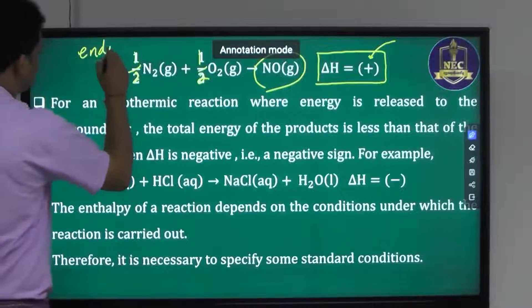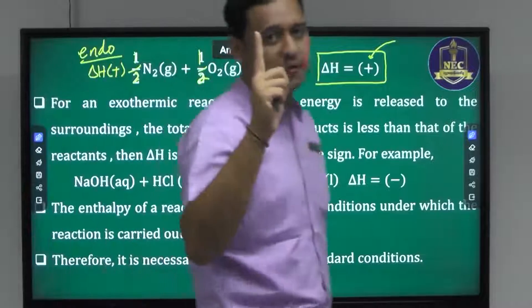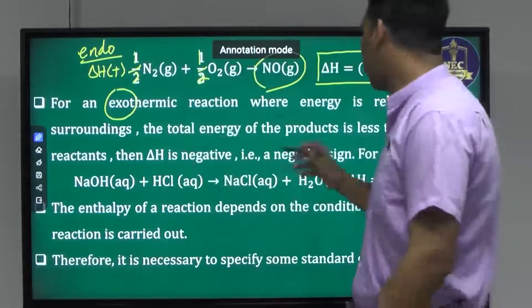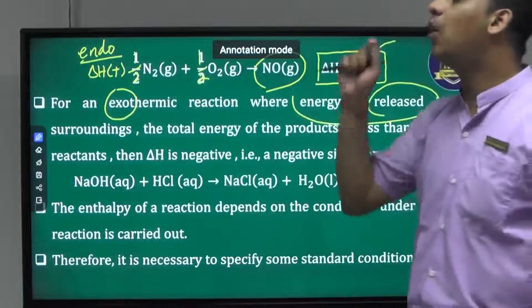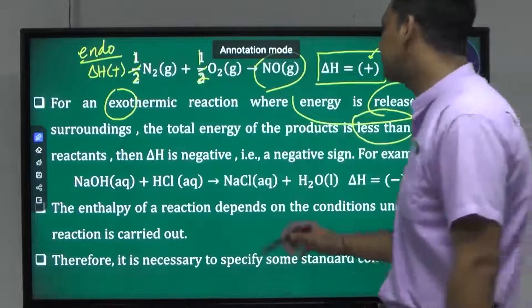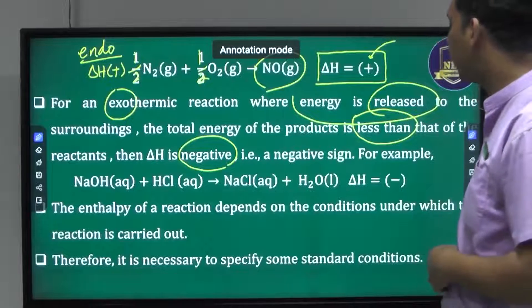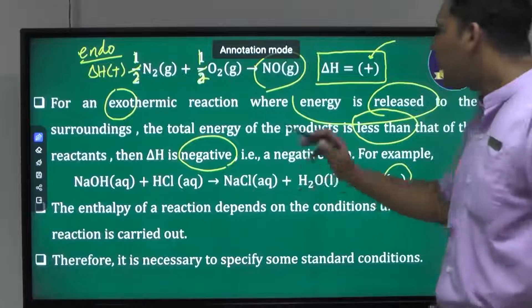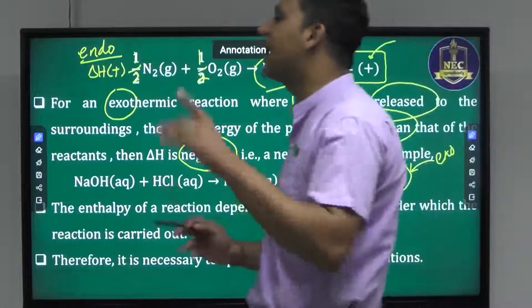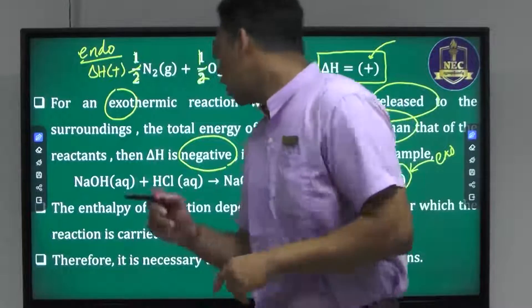This is the endothermic reaction. So this is the enthalpy. In an endothermic reaction, the surroundings and energy is flowing in. The total energy goes to the products, which are at a higher energy level. Delta H is positive, and delta H for the reaction is positive.